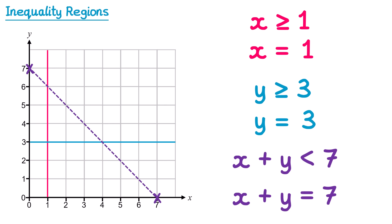Now we identify the region satisfying all three inequalities at once. For x ≥ 1 we need to be to the right of the red line — I draw an arrow pointing right. For y ≥ 3 we need to be above the blue line — arrow pointing up. For x + y < 7 we need to be below that line — arrow pointing down. The region where all three arrows point is this triangle in the middle, so we label that R and the question is done.